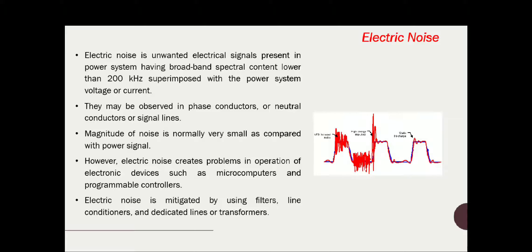Electrical noise signals are unwanted in your electrical signal but are present without any intention. They may be observed in phase conductors, neutral conductors, or signal lines. The magnitude of the noise is normally very small compared with the power signal. However, electrical noise creates problems in operation of electronic devices such as microcomputers and programmable controllers. Electric noise is mitigated by using filters, line conditioners, and dedicated lines or transformers.